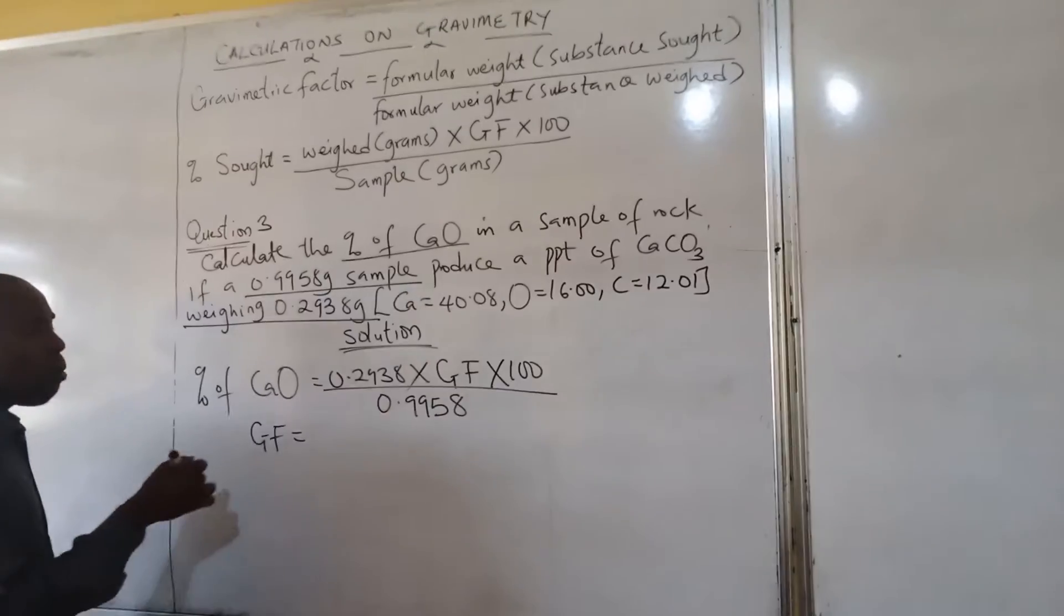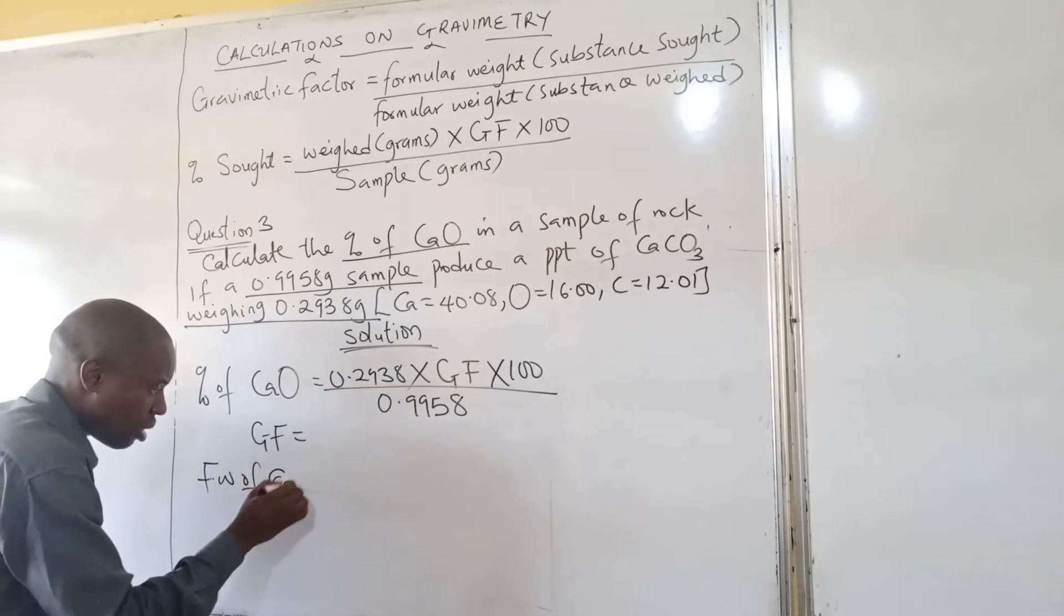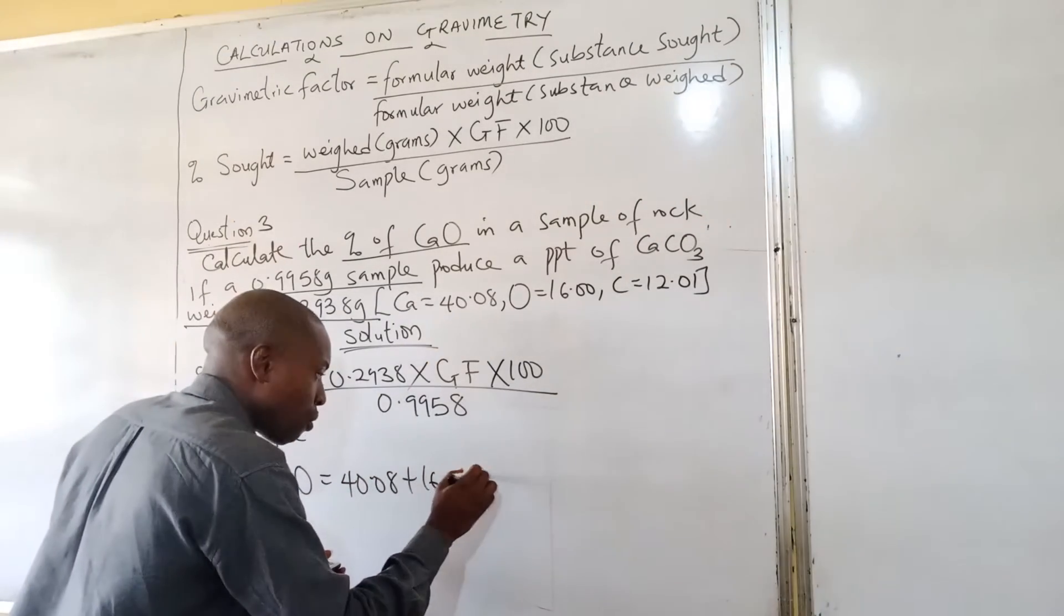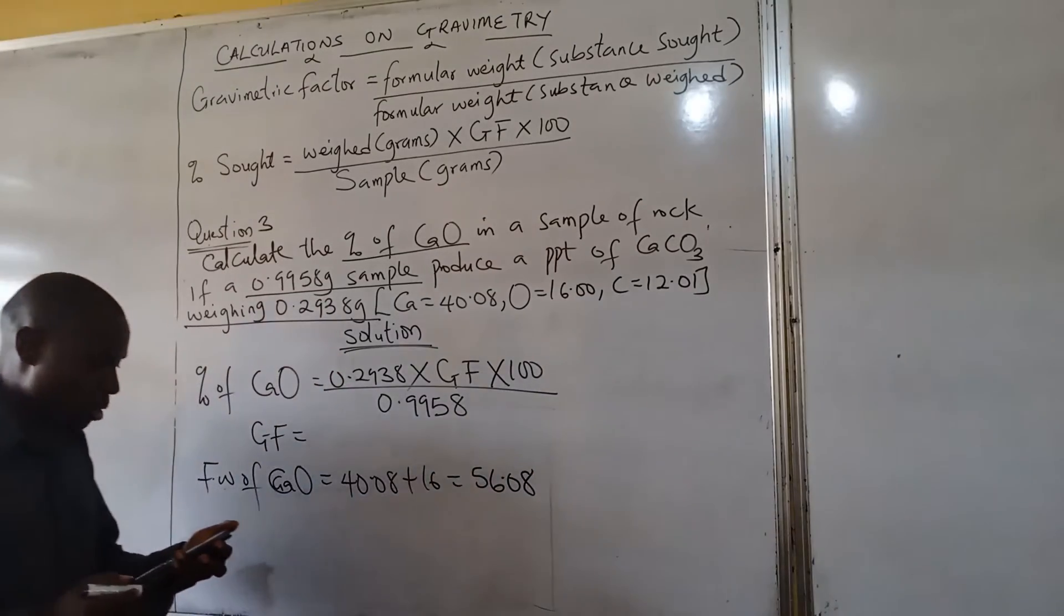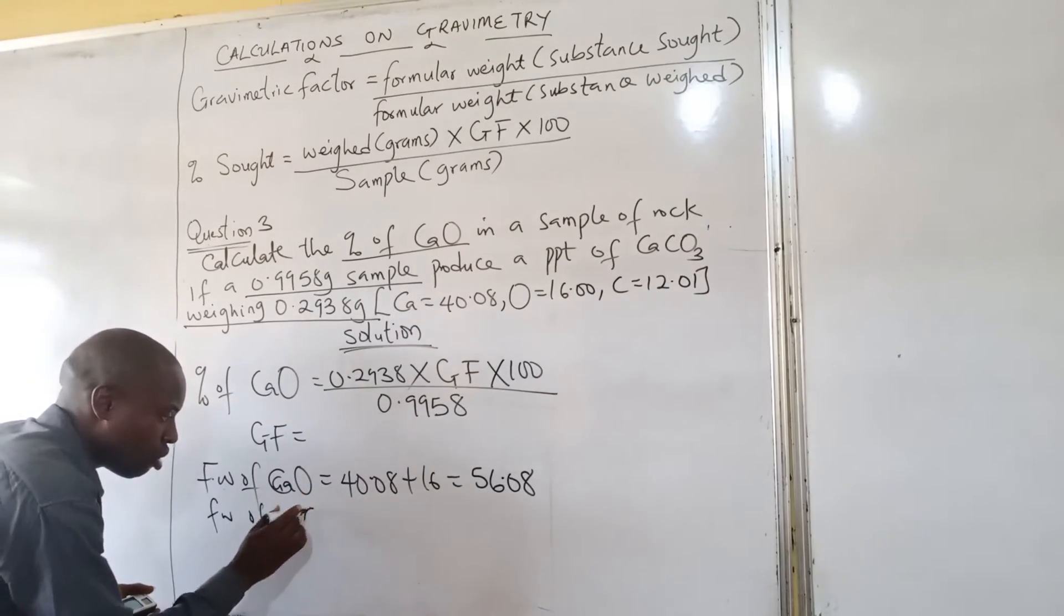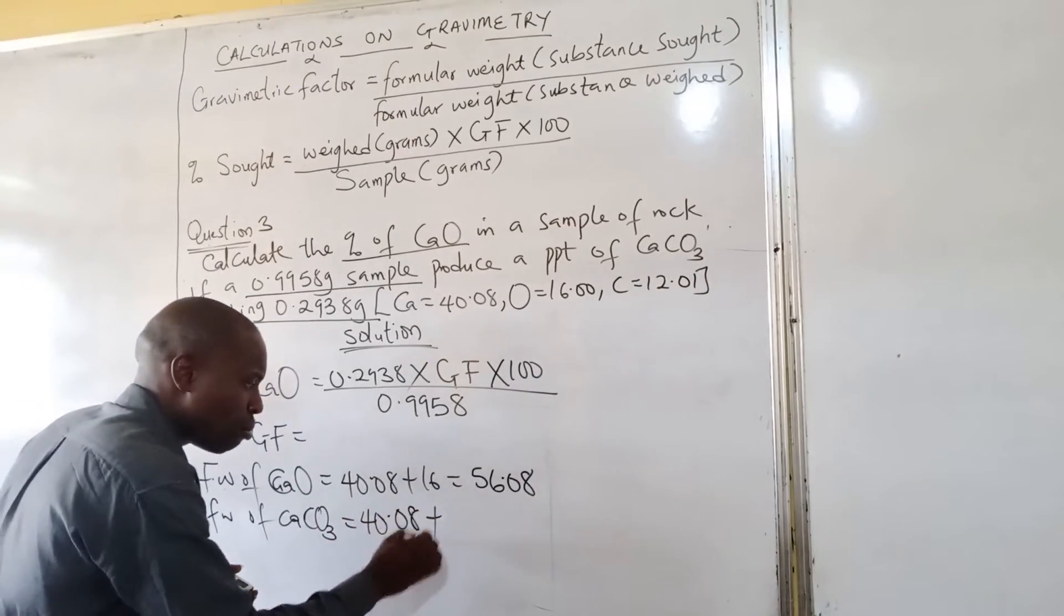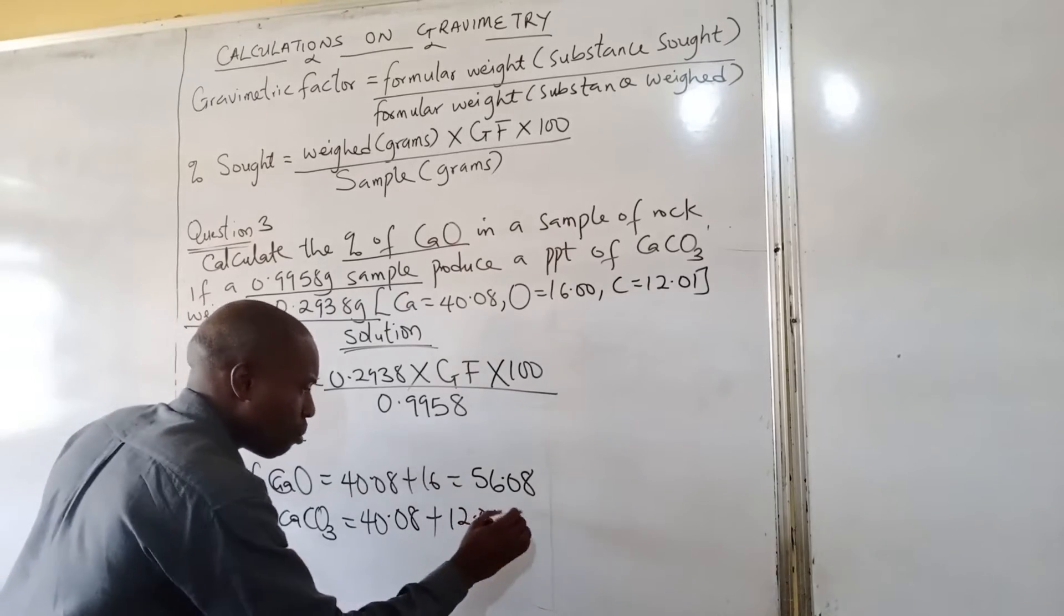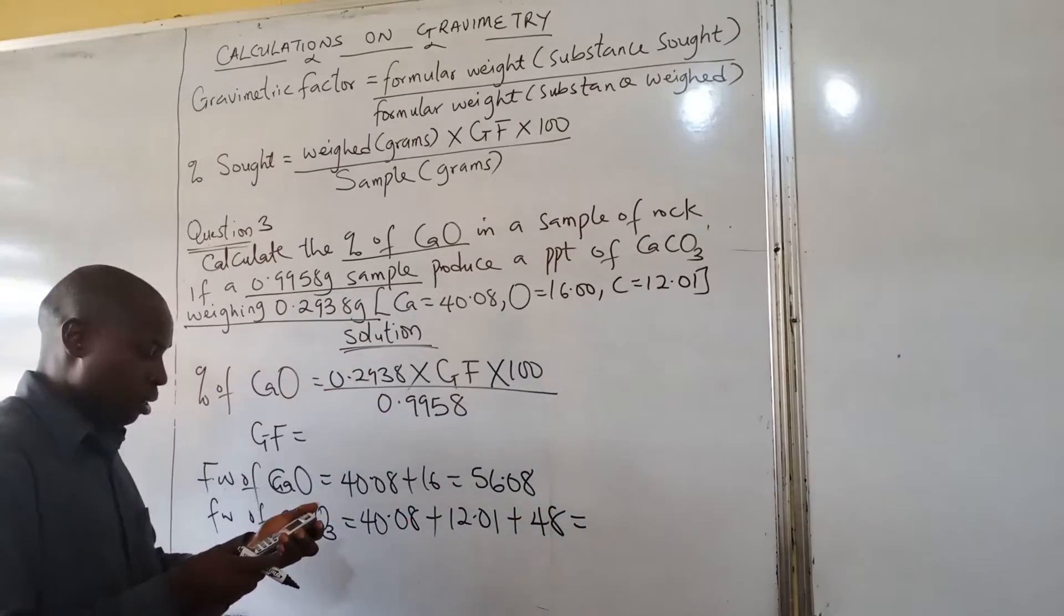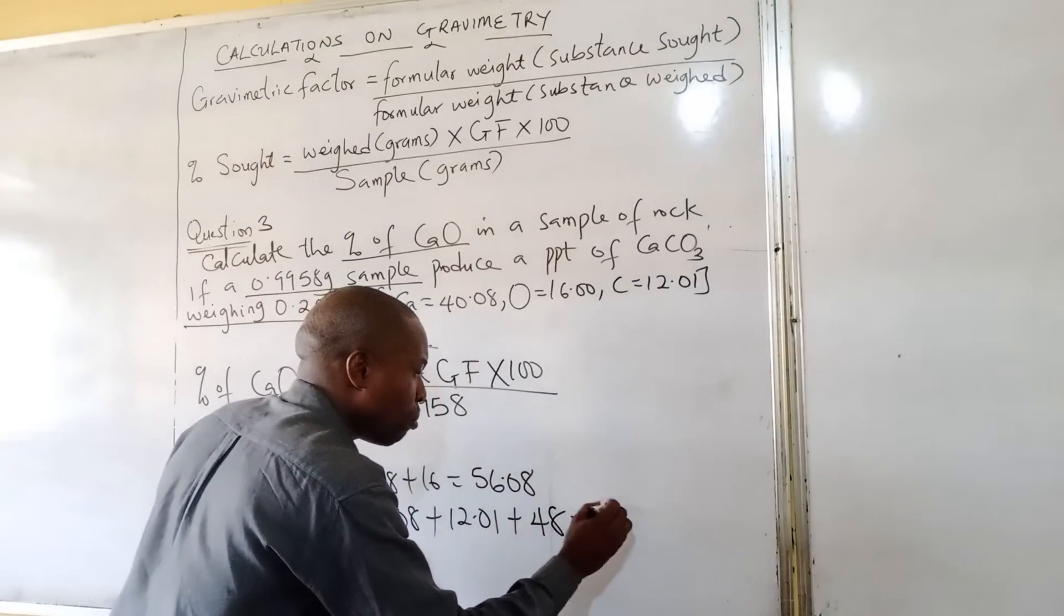Now, the formula weight of calcium oxide is equal to 40.08 plus 16. When you divide this, you may have it to be 56.08. Now, the formula weight of calcium carbonate is equal to 40.08 plus 12.01 plus 3 times oxygen which is 16 and that should give me 100.02.